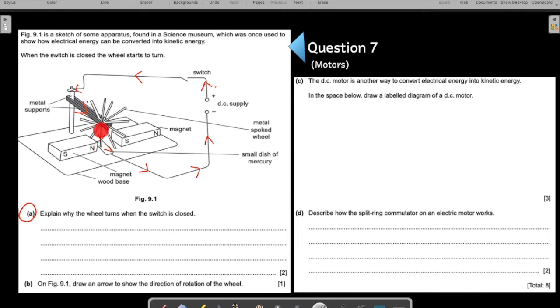So whenever you have a current carrying conductor in the region of the magnetic field, the conductor experiences a force and therefore there is a turning of the wheel happening. So right now the current is flowing downwards in this spike.